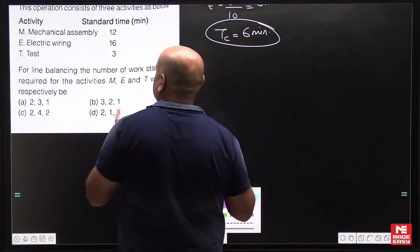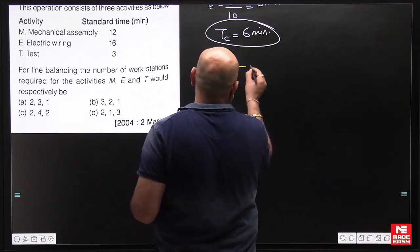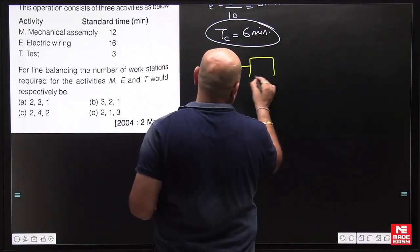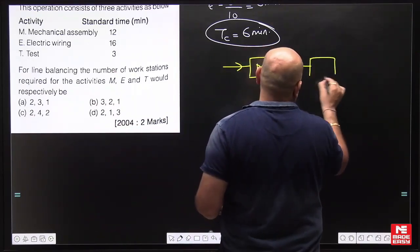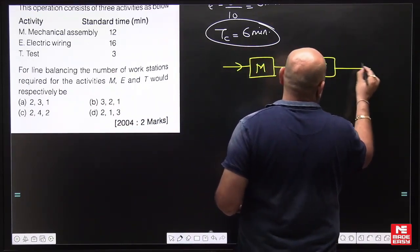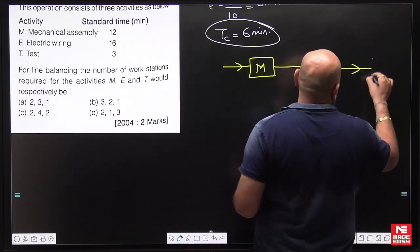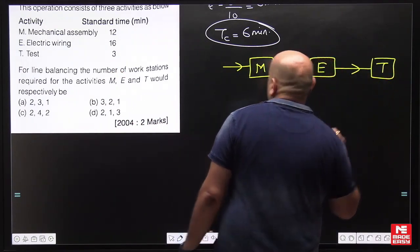So we should directly go through the options available. The three assembly lines are like this: M for mechanical assembly, then E for electric, and let the testing be T.